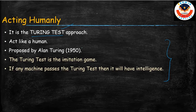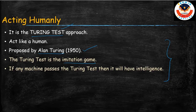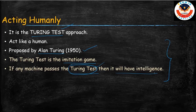The Turing test approach was proposed by Alan Turing in the year 1950. He is a great scientist, and there is a major award named after him — the Turing Award. The Turing test is an imitation game: it checks whether a machine can imitate the way humans behave. If a machine passes the Turing test, we can say that machine is also intelligent. That is what acting humanly is.